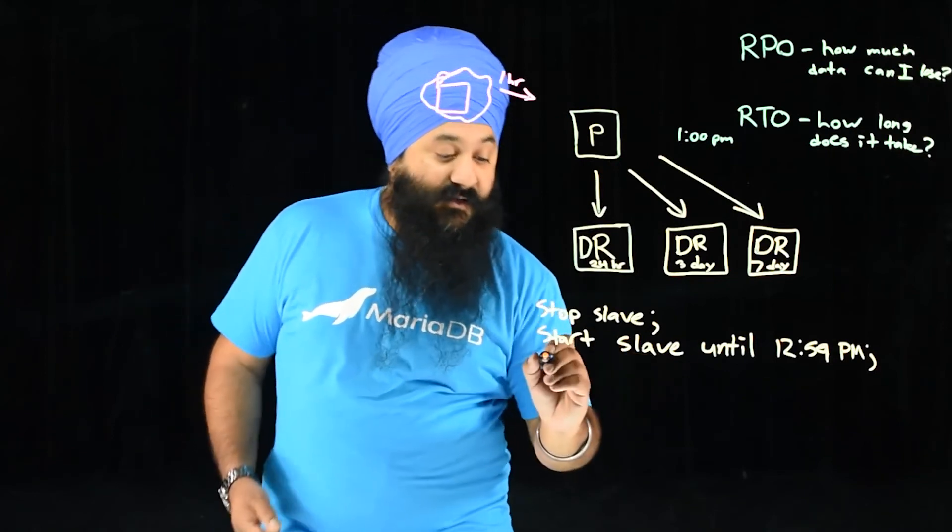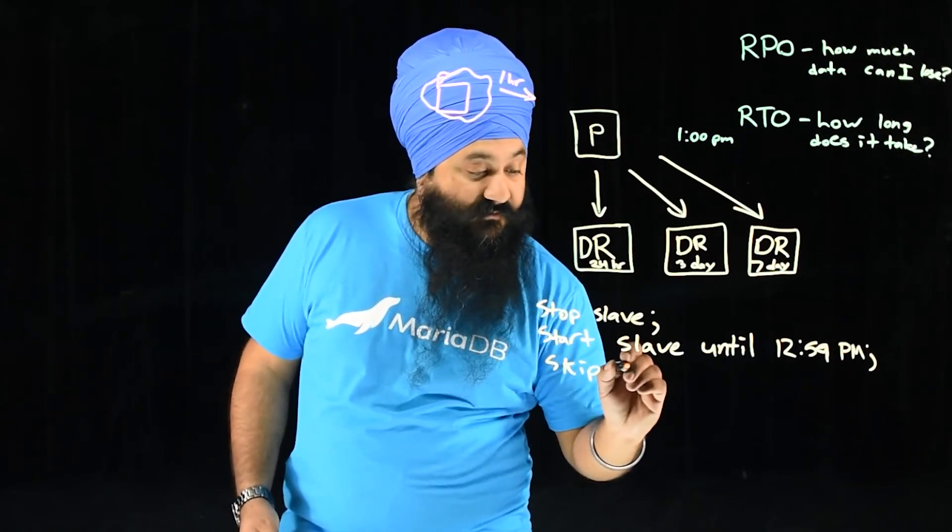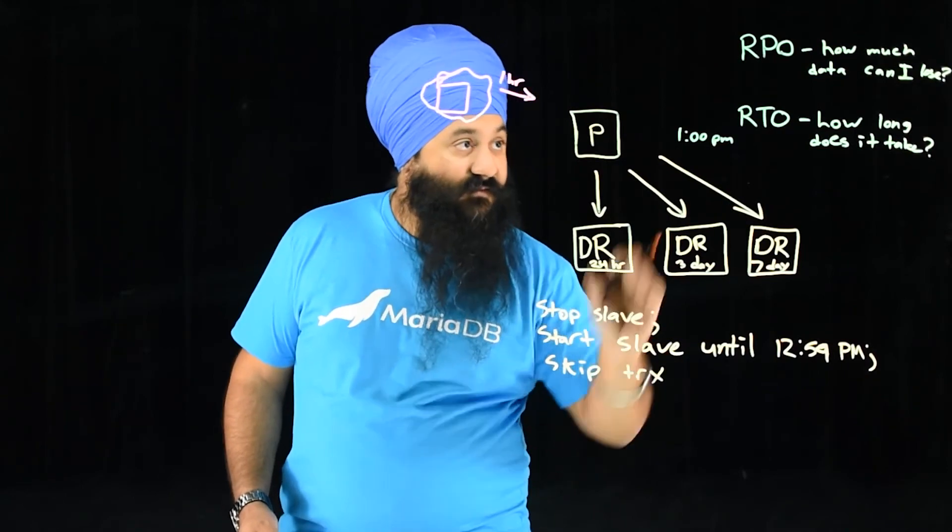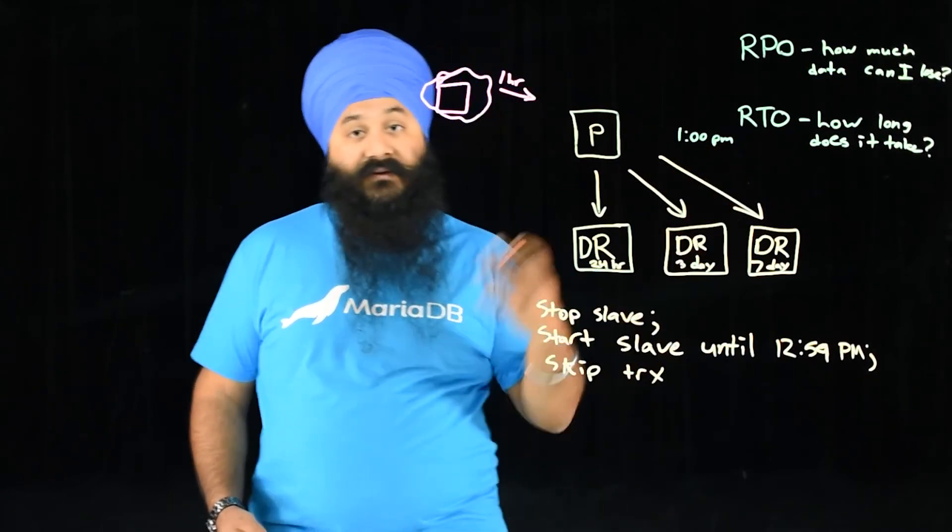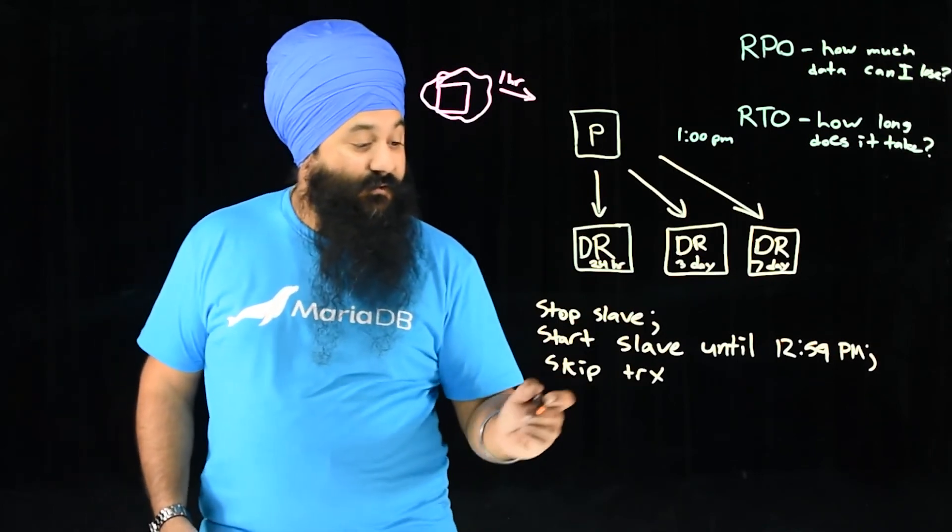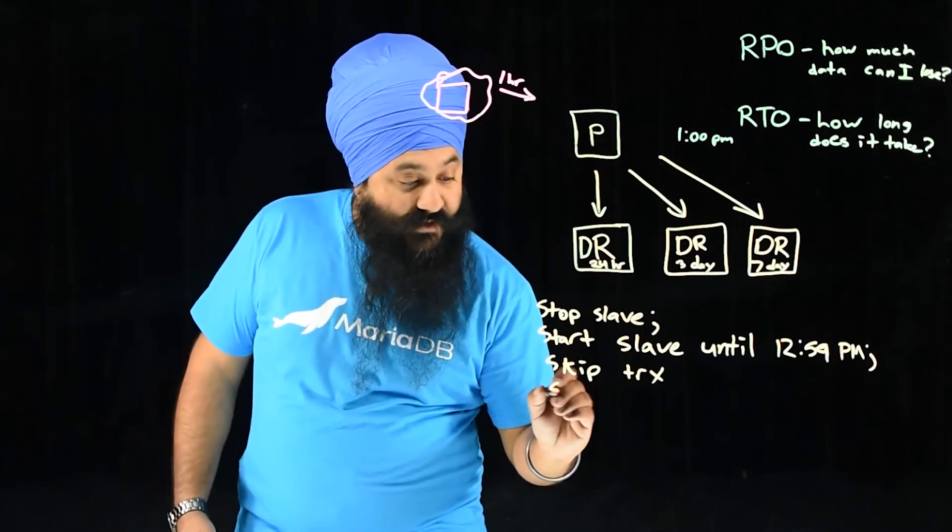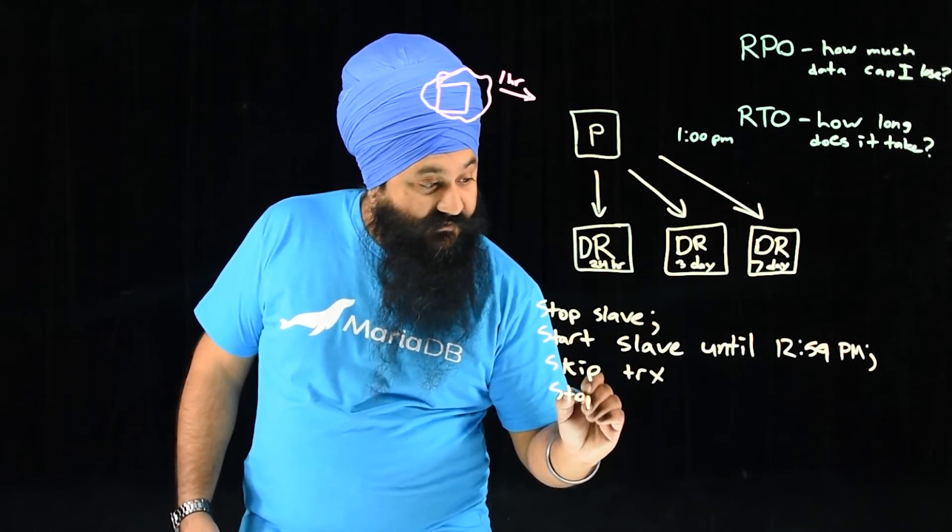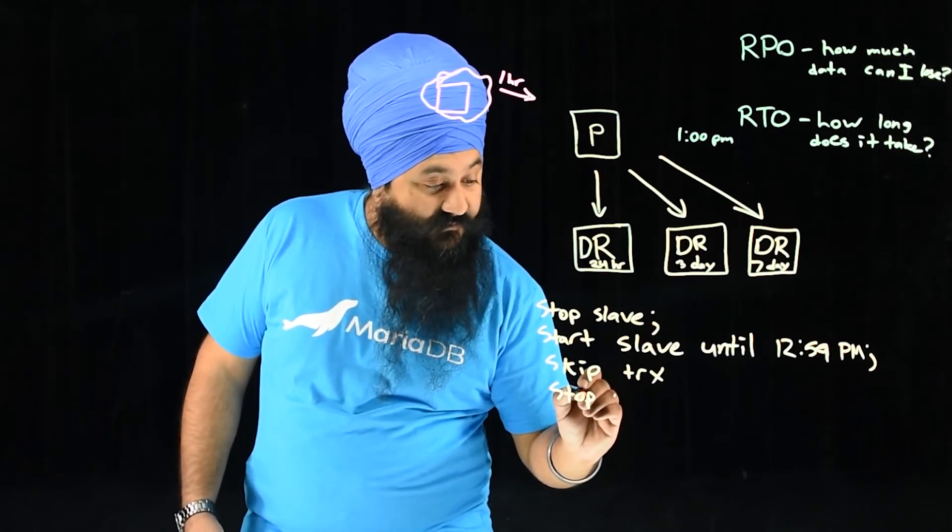And then you can actually do skip. So you can do a skip transaction. So you can skip the GTID or the bin log position for that specific transaction that was the issue. And if you want, you can then again issue stop slave, or sorry, start slave.